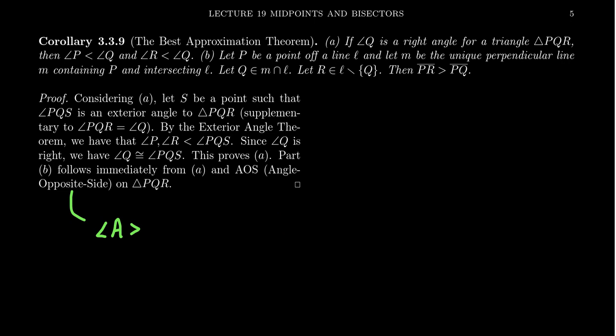Best approximation actually says two things, and it has to do with right triangles. Suppose that angle Q is a right angle for some triangle PQR. Then we have that angle P is less than Q, and angle R is less than Q as well. So in a congruence geometry, for right triangles, the right angle is the biggest angle in the triangle.